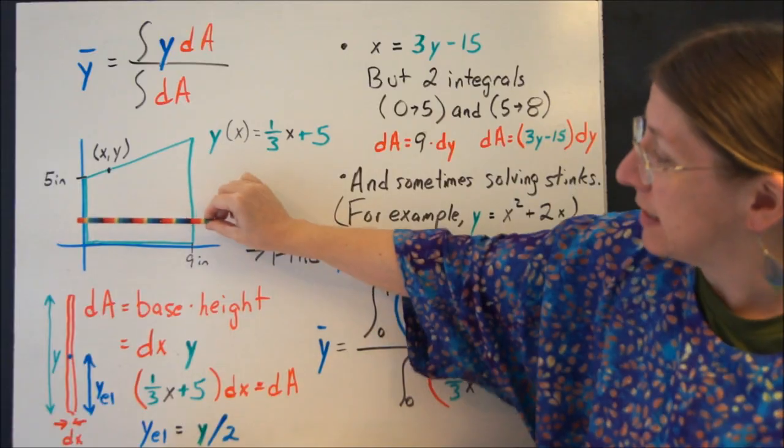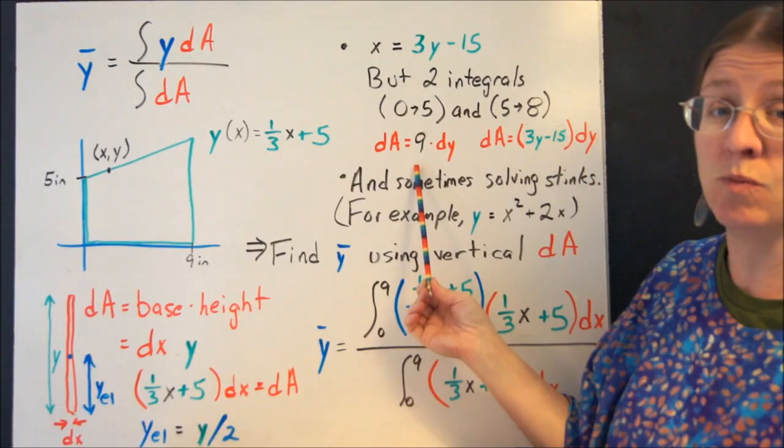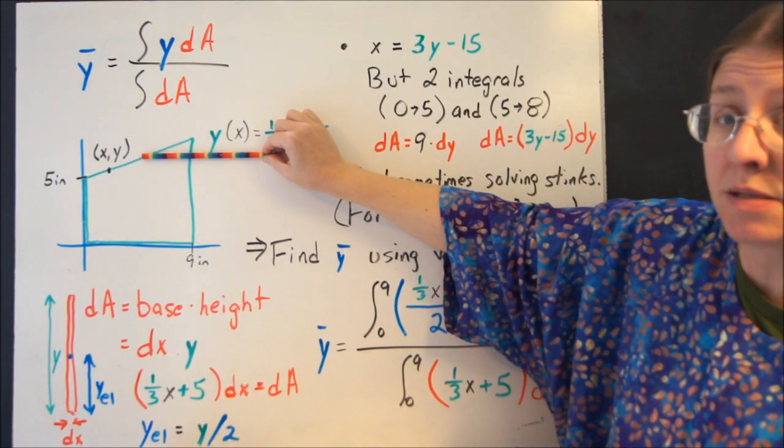The problem with that is if I'm taking a horizontal rectangle right here, my horizontal rectangle would be 9 base. But by the time I get up to this point, my horizontal rectangle isn't the same.